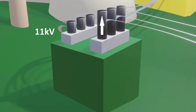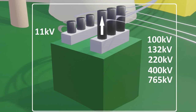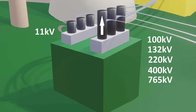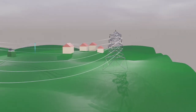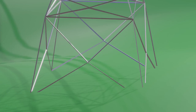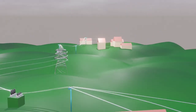This 11 kV level is stepped up to 100 kV, 132 kV, 220 kV, 400 kV, and 765 kV using power transformers installed at substations. So the 11,000 volts level is stepped up to extra high voltage levels such as 100,000 volts, 132,000 volts, 220,000 volts, 400,000 volts, and 765,000 volts. Then this extra high voltage electricity is transmitted over long distances using long conductors supported by huge towers. This system of conductors and towers is called a transmission line.